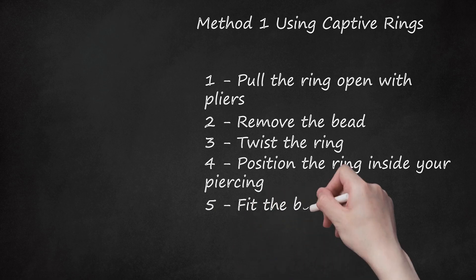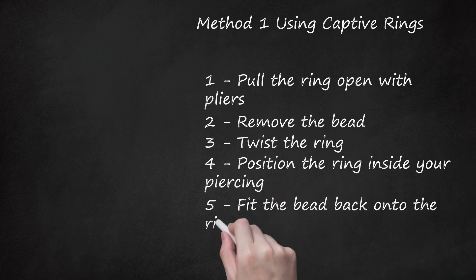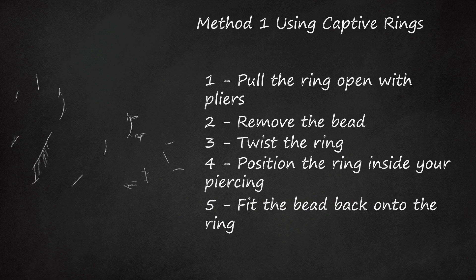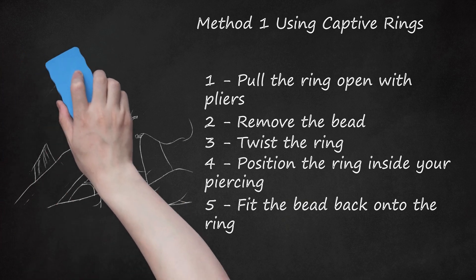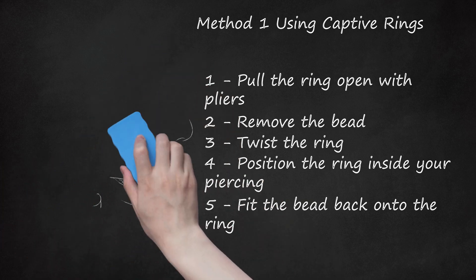Step 5 - Fit the bead back onto the ring. The bead should have small dimples on either side. Fit the ends of the ring into these dimples by placing one side of the bead onto one end of the ring. Carefully twist the two ends toward each other again until they line up evenly. Then push the second end onto the other side of the bead. Once the bead is snug and secure, the nose ring is set in place.